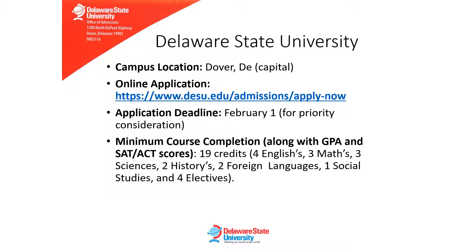Delaware State University is located in Dover, Delaware. The online application can be accessed at the URL on this slide. When accessing the application from the DSU homepage, click on Apply on the right side bar of the homepage and then click Apply Online Now.